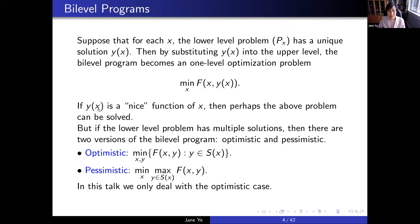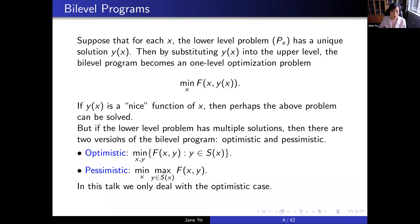If y(x) can be solved, it's just a function of x, and you can solve it—perhaps with a nice C1 function where you can calculate the gradient. But most bi-level programs have multiple lower-level solutions. In that case, there are two versions: one is optimistic, another is pessimistic. We will mainly consider the optimistic case in this talk.